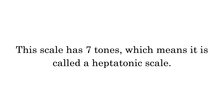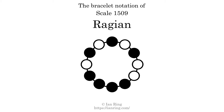This scale has seven tones, which means it is called a heptatonic scale. This is a bracelet notation diagram of scale 1509. The shaded circles represent tones that appear in the scale, and they are read clockwise, starting at the top.